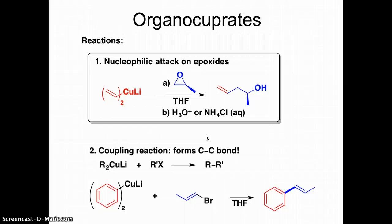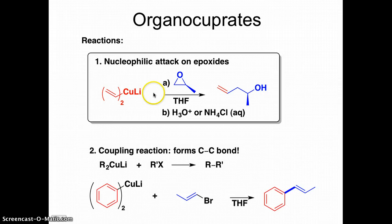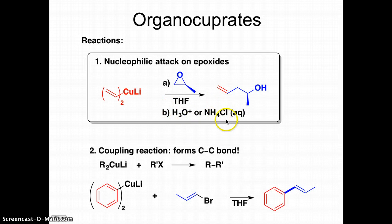With organocuprates we have two different reactions. The first is an epoxide opening — just like with an organomagnesium or organolithium reagent, only much milder. We open on the least substituted side, form a negative charge on oxygen, then do an aqueous acid workup — for example aqueous ammonium chloride — to isolate the alcohol. I recommend pausing the video and going through that mechanism to make sure you understand how the electrons flow.